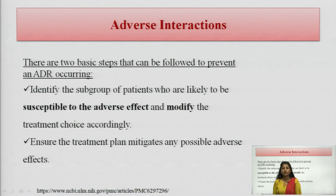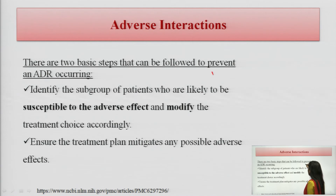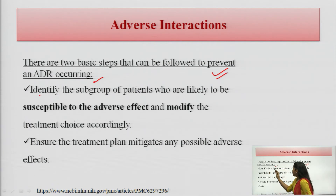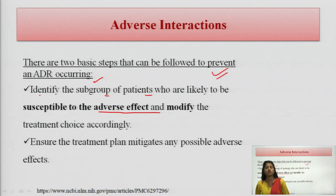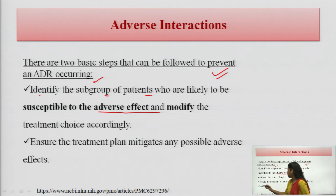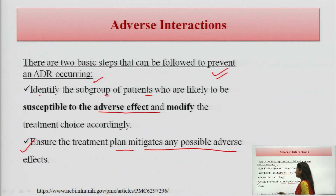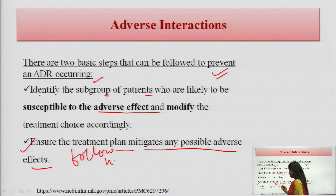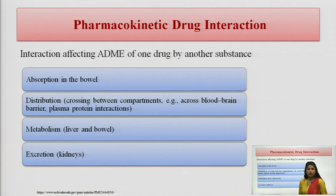We will now discuss the basic steps which can be used to prevent adverse drug reactions. First is identification of subgroups of patients who are likely to be susceptible — some patients have already experienced adverse drug reactions in previous experiences. We take that information so that if we are giving any new treatment, we avoid that particular drug. Another step is to ensure the treatment plan mitigates any possible adverse effects by communicating with the patient about how the therapy is going, which helps reduce adverse drug reactions.